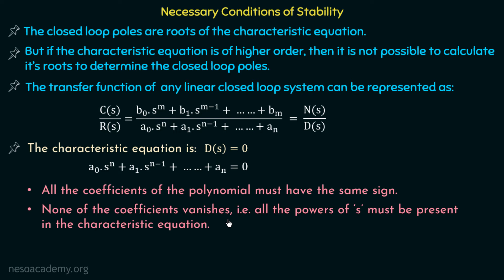The second necessary condition is that none of the coefficients vanishes — that is, all the powers of s must be present in the characteristic equation. No power of s must be absent. For an nth-order equation, we have powers s^n, s^(n-1), and so on down to s^0, and coefficients of all these powers must be present.